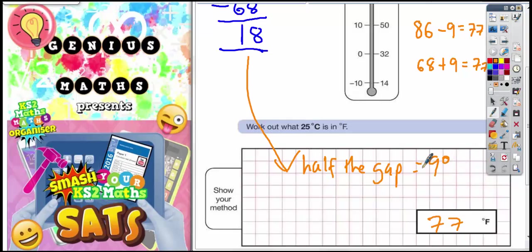And then all you've got to do then is do either your 86 subtract the 9 or the 68 add the 9 to show why it's 77. And that's the answer completed.